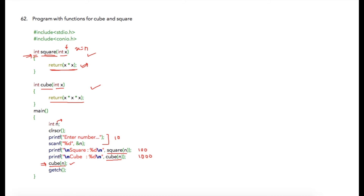If we call the cube function without capturing its return value, it will still be executed but there won't be any difference in output because the function is only doing calculations, not printing any values. Whether to use or not use the values returned by your function is completely your choice. The compiler might give you just a warning, but it is confirmed that the statement will be executed.